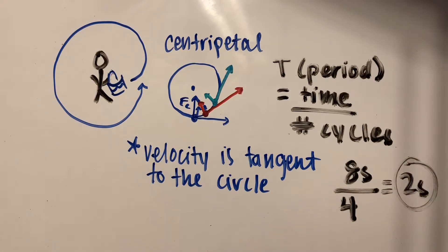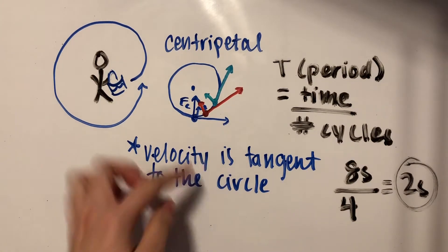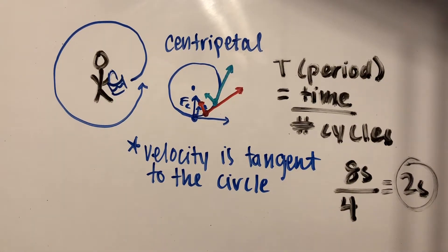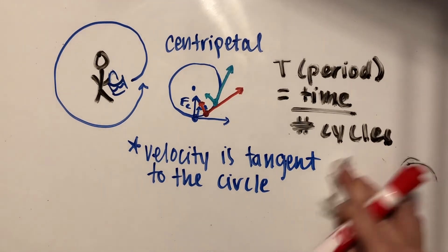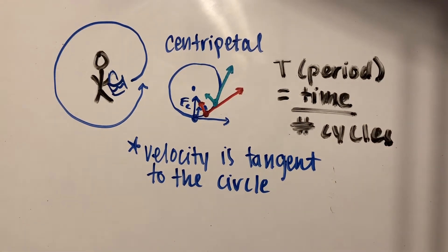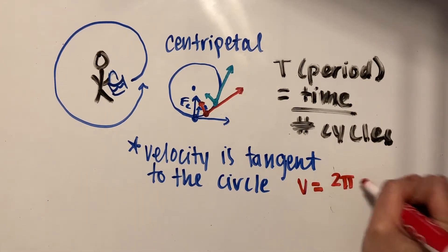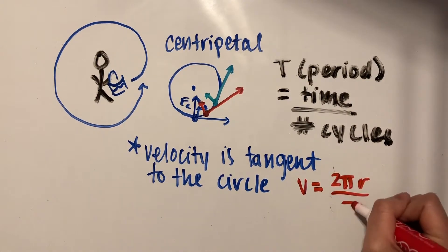The period is basically how much time it takes to go through one whole cycle of this circle. If you know the period of the object, you can also find the velocity, because velocity is defined as 2πr over the period. Where did we get this 2πr from?